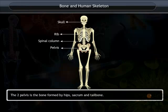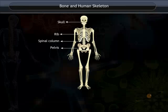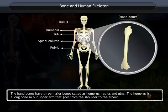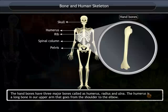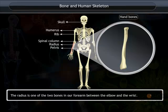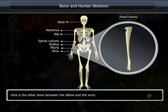The pelvis is the bone formed by the hips, sacrum and tailbone. The hand bones have three major bones called the humerus, radius and ulna. The humerus is a long bone in our upper arm that goes from the shoulder to the elbow. The radius is one of the two bones in our forearm between the elbow and the wrist. The ulna is the other bone between the elbow and the wrist.